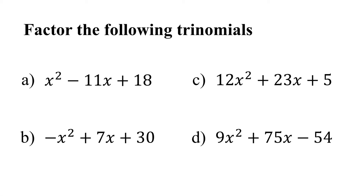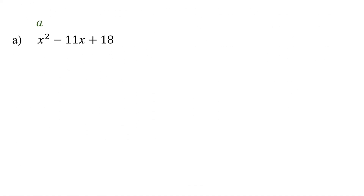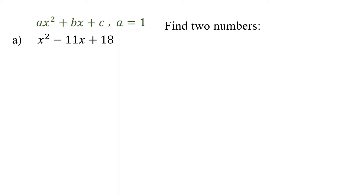In this lesson, we will focus on how to factor trinomials with a leading coefficient of 1 as well as those different from 1. When the leading coefficient is 1, our first step is to find two numbers that multiply to give the constant term and at the same time add up to the coefficient of the middle term.